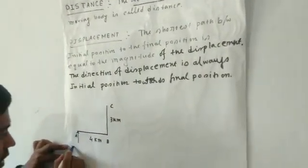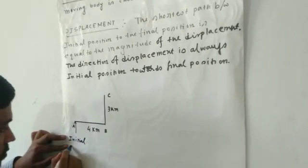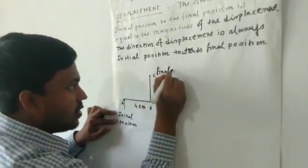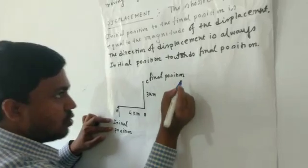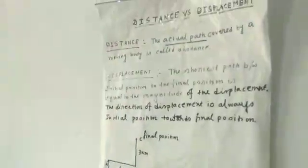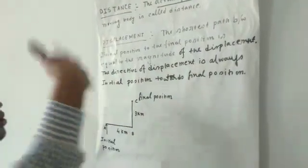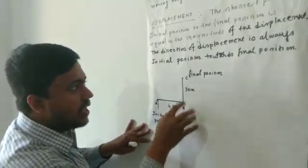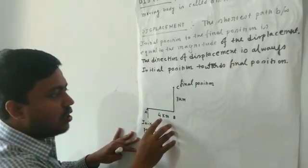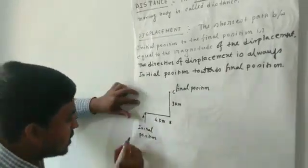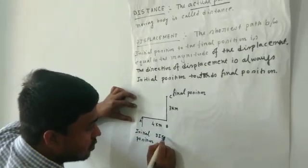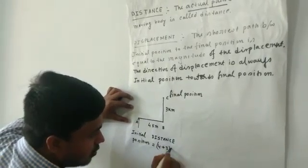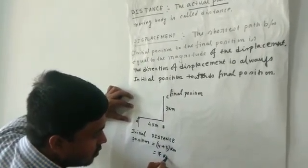A is the initial position and C is the final position. So what is the value of distance? Distance means actual path followed by the body. Initially the particle is at point A, then reaches point B, and then reaches point C. So actual path covered by the body equals 4 km plus 3 km. Distance equals 4 plus 3, equal to 7 km.